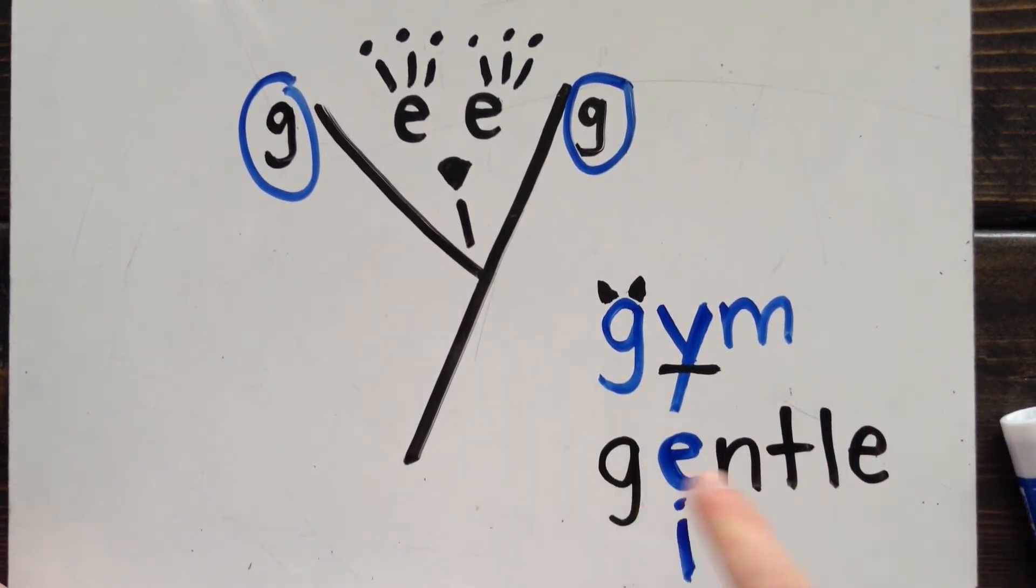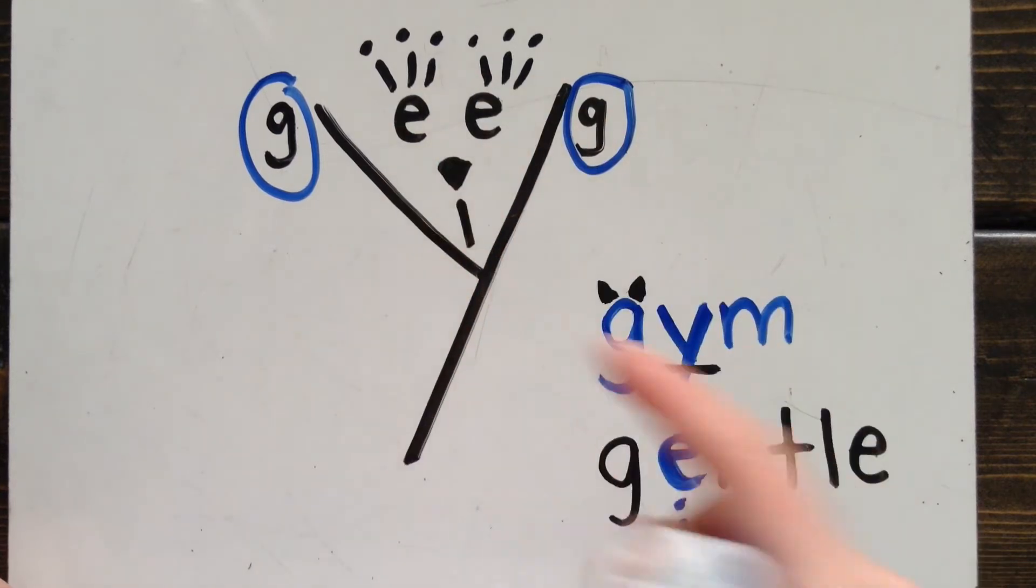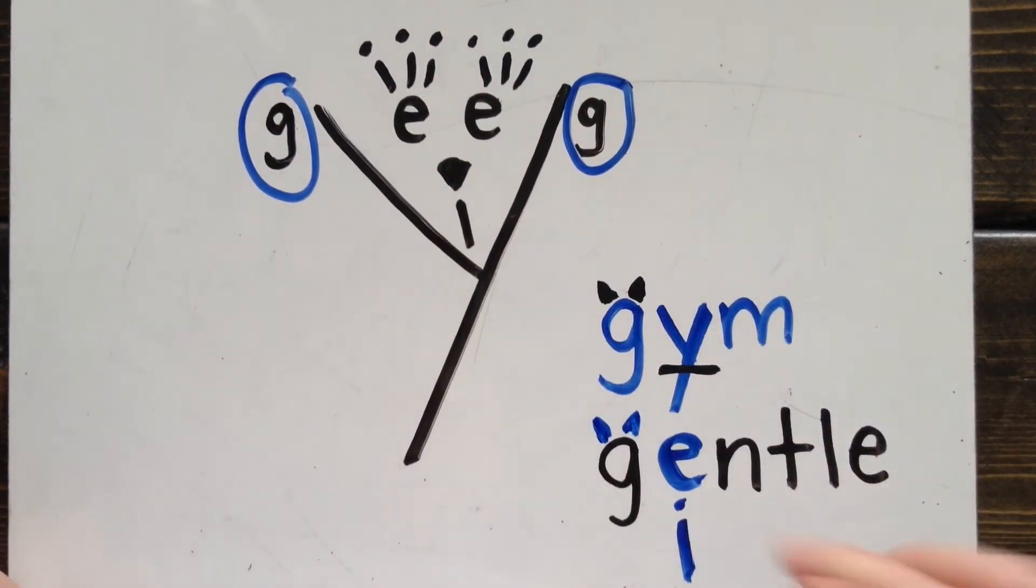The next word is gentle. Gentle has a soft G, as in Gigi Cat. And I know that's the case because the letter E is what comes after the G. And E is in my Gigi Cat picture. Draw some cat ears. Jim. Gentle.